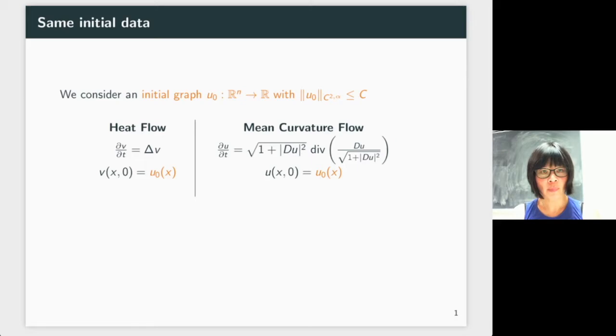The heat flow solution will be denoted by V, so ∂V/∂t = ΔV, and V at time t = 0 is U₀.